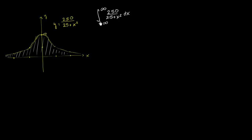We've already seen improper integrals where one boundary was infinity, but how do you handle one boundary at positive infinity and one at negative infinity? You can't take a limit to two different things. So the way we're going to tackle this is to actually break up this area into two different improper integrals.